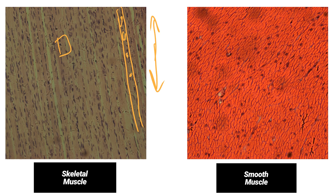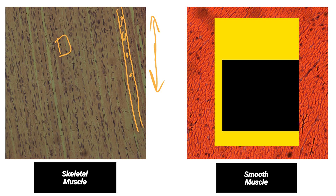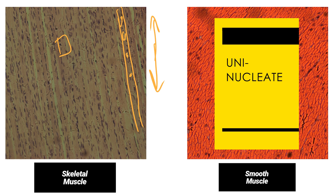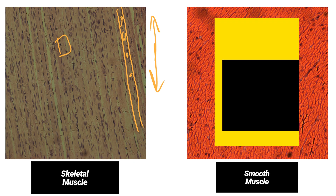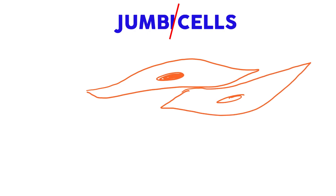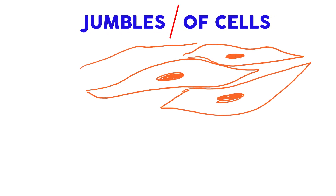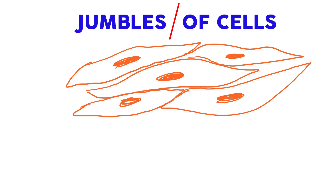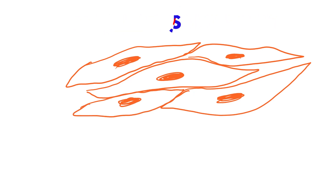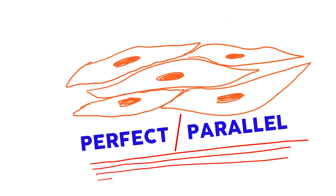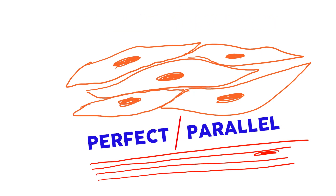Smooth muscle, on the other hand, has muscles jumbled together in all different directions, and when we build it up, it looks something like this. Smooth muscle cells are jumbled together, which is in stark contrast to our skeletal muscle, which are arranged in perfect parallel with multiple nuclei.